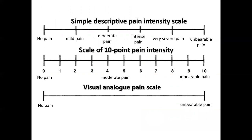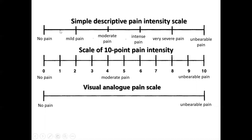The three most popular pain scales are: the Visual Analog Scale, where the patient places a mark on a line from no pain to worst pain; a 10-point numerical scale where the patient chooses a number for pain intensity; and a graded descriptive scale ranging from no pain to unbearable pain, where the patient indicates where their pain falls.